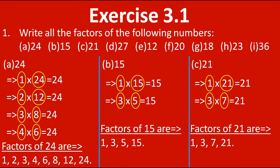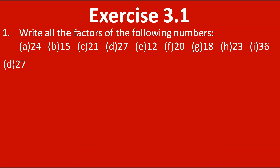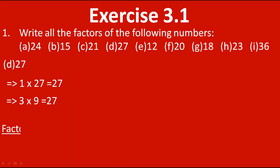Now let's move towards the fourth one, 27. Starting from 1: 1 into 27 gives us 27. We don't have 27 in the table of 2. In 3's table we have 3 nines are 27. We don't have 27 in the 4th or 5th table — 5th table has 25. We don't have it in the 6th table either. In the 7th table we have 7 threes are 21, so not there. Next is 8, then 9 — now it is reversing, so we stop. The factors of 27 are 1, 3, 9 and 27.